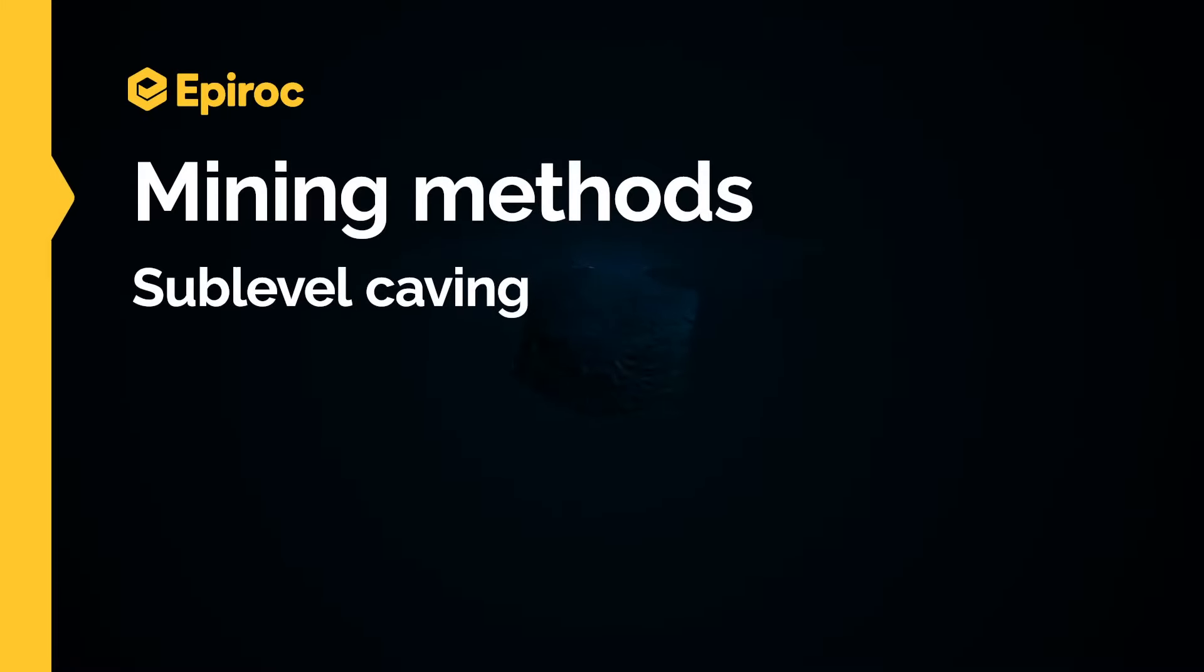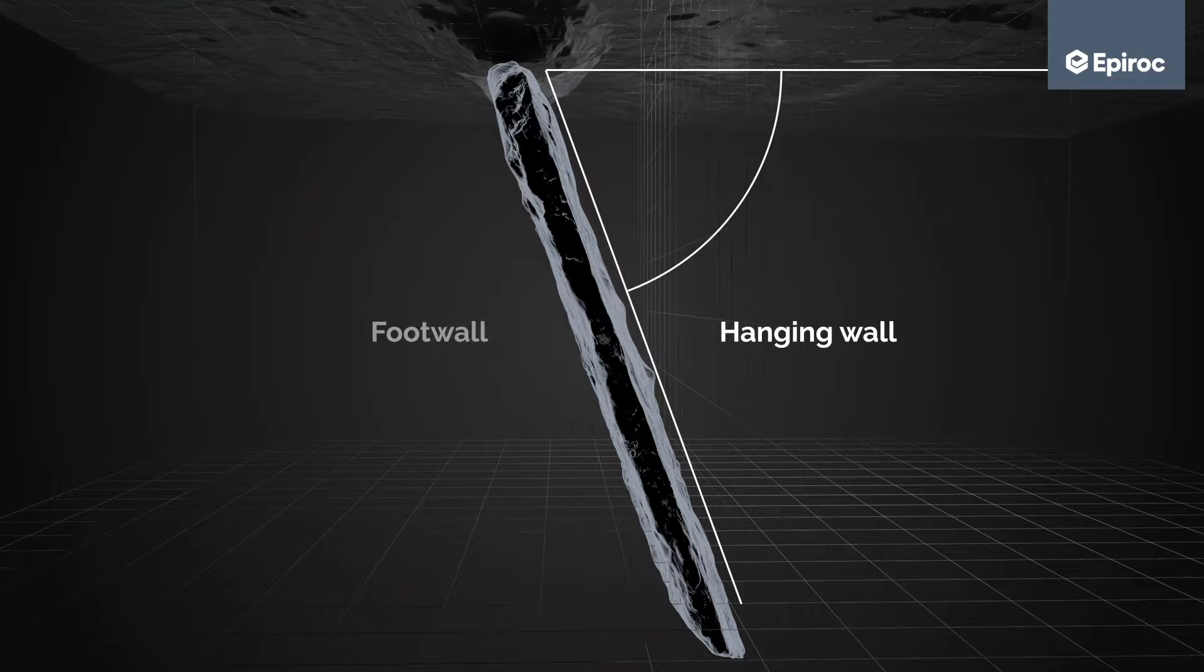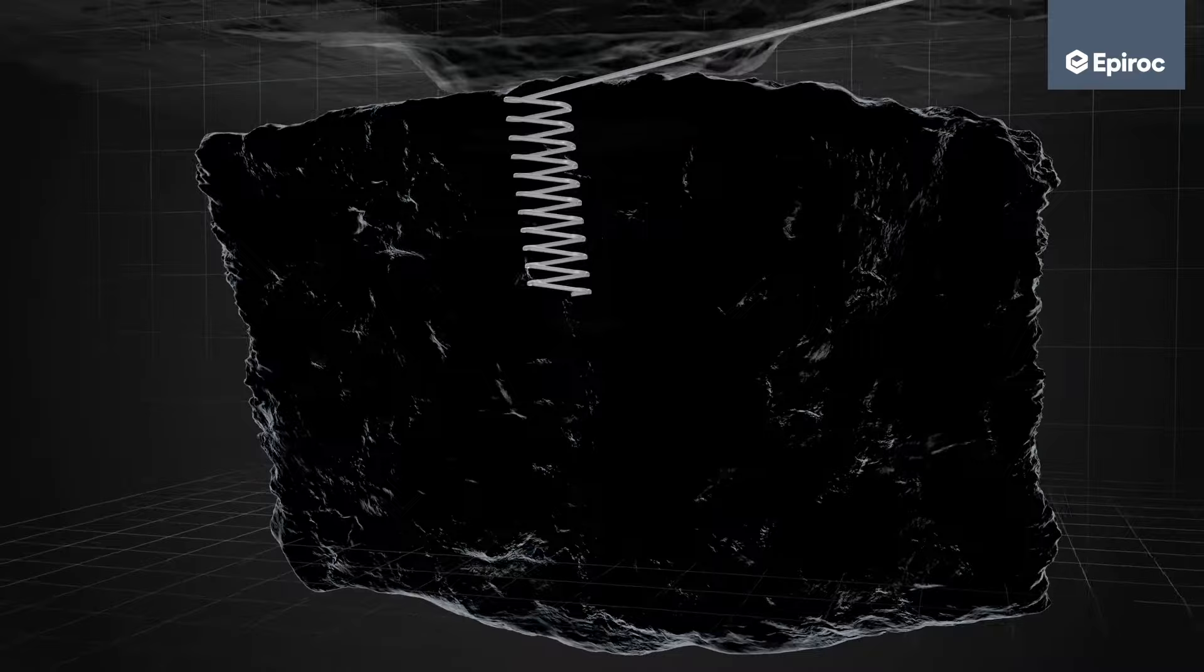Sub-level caving is a large-scale mining method suitable for large ore bodies with a steep dip and a rock mass where the host rock in the hanging wall will fracture under controlled conditions. Therefore, the infrastructure is always placed on the footwall side.